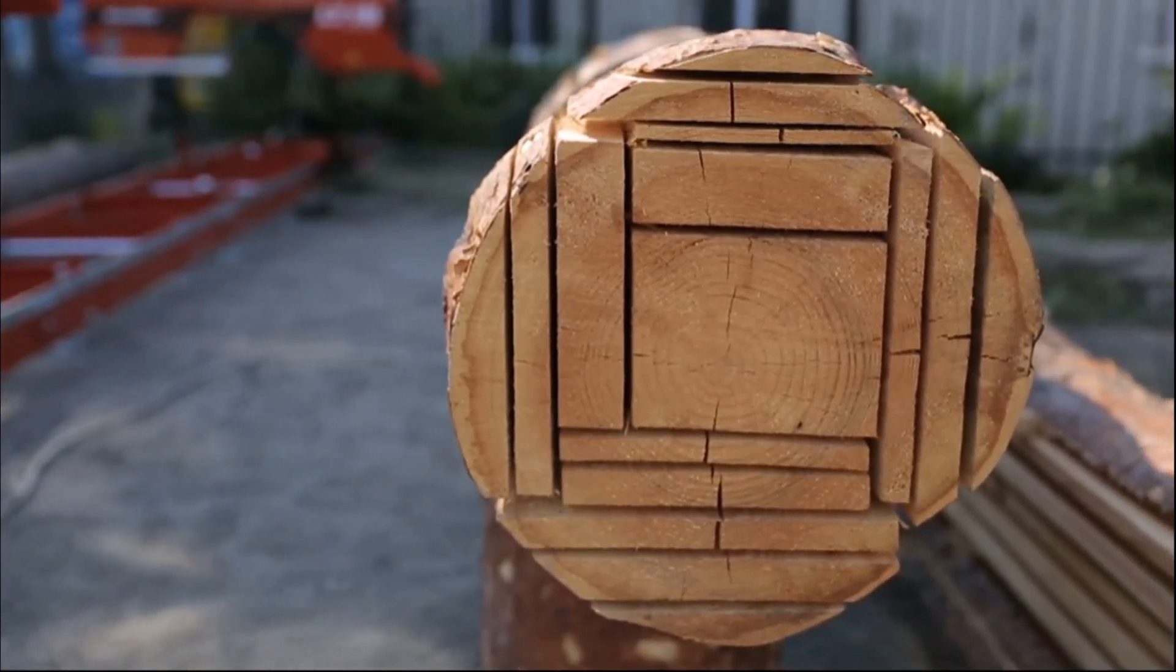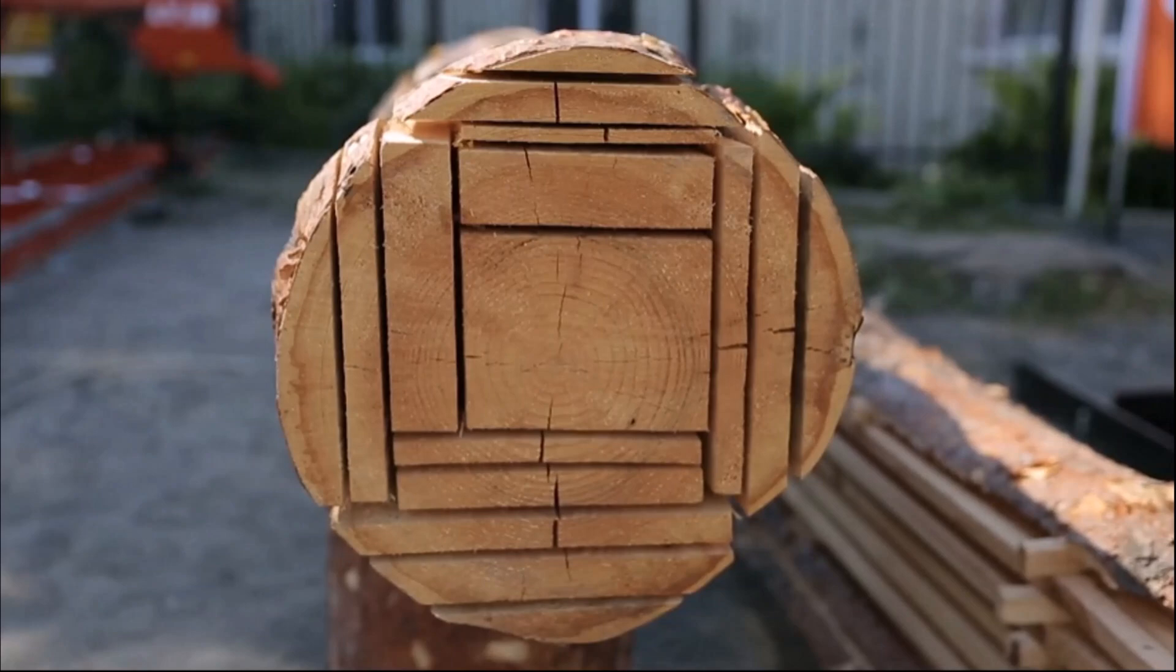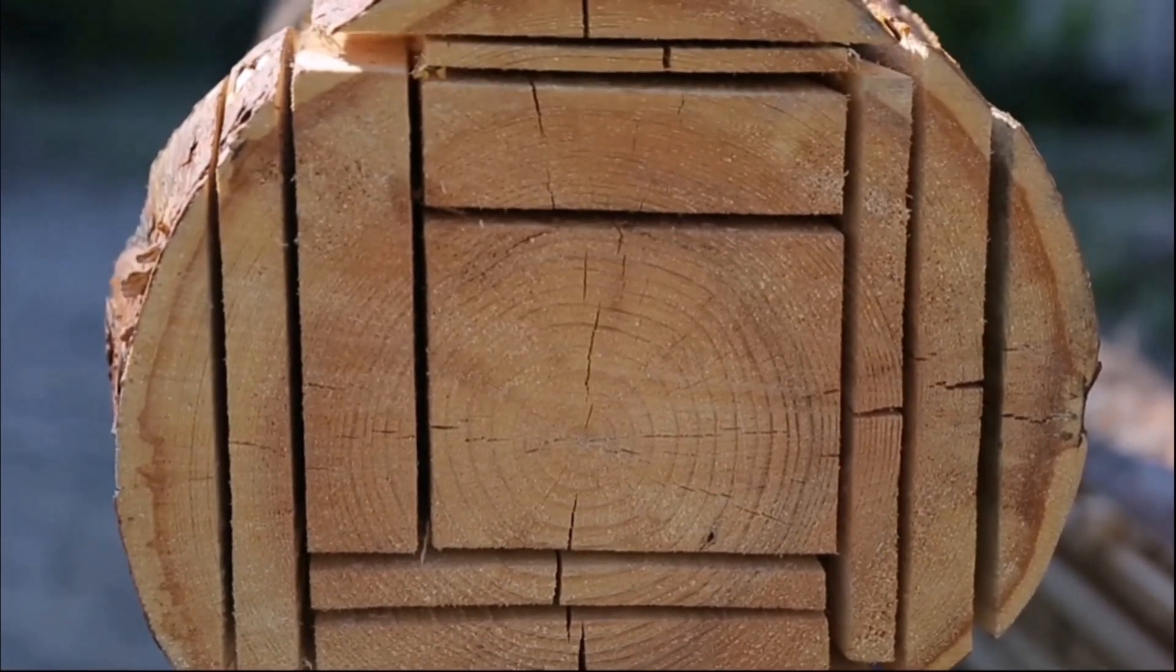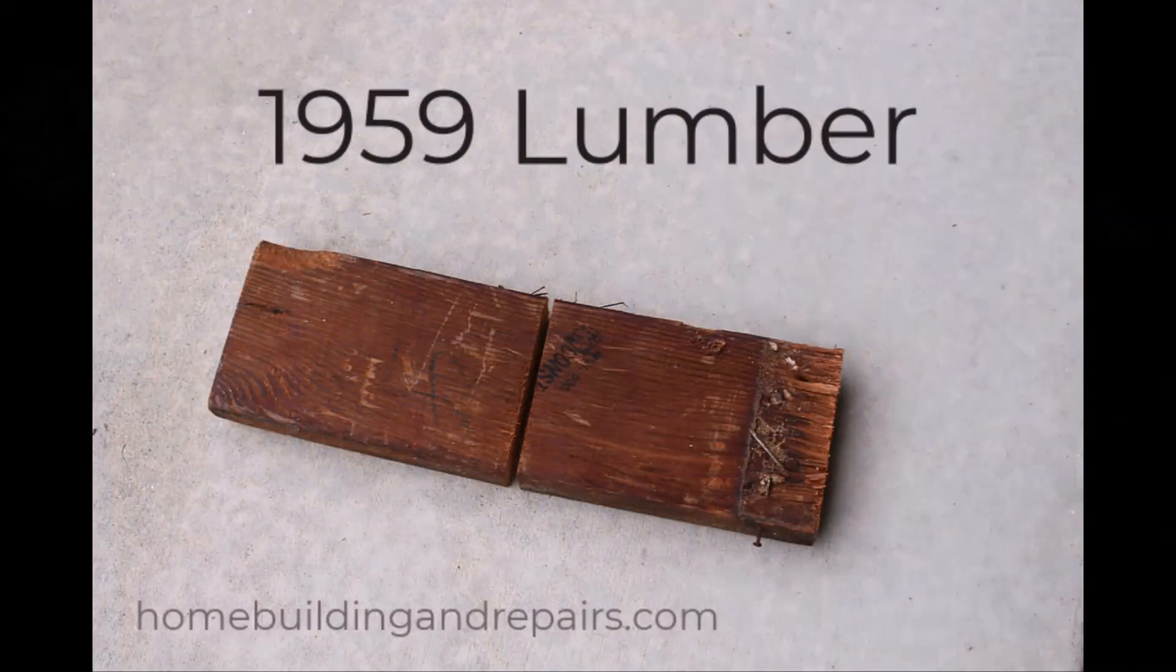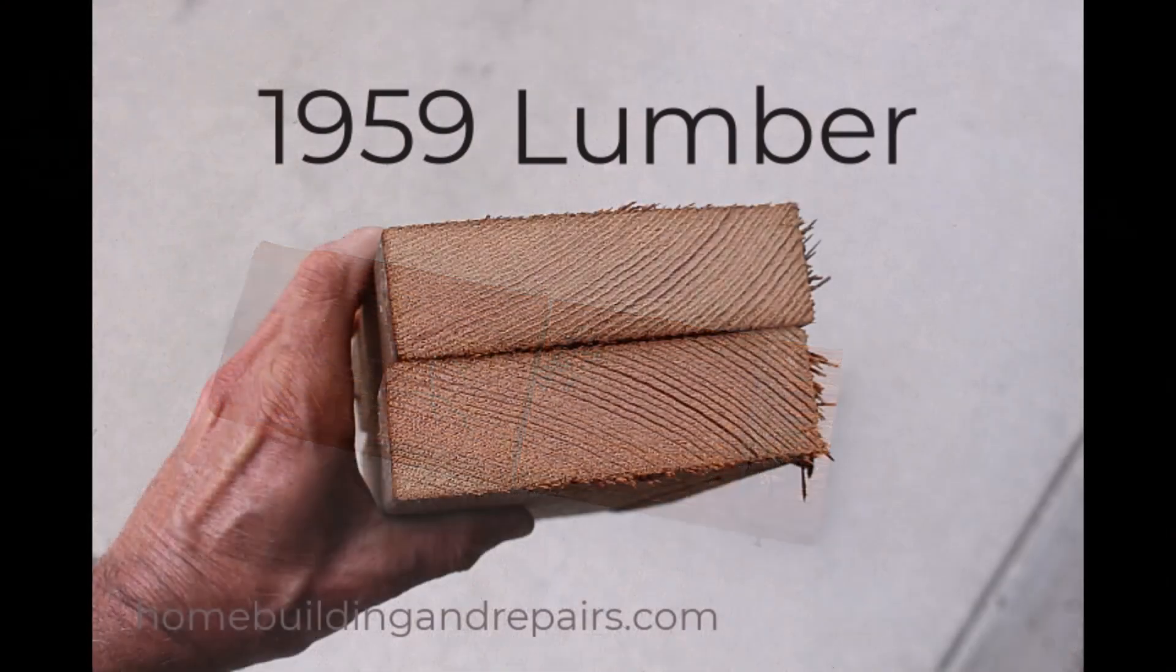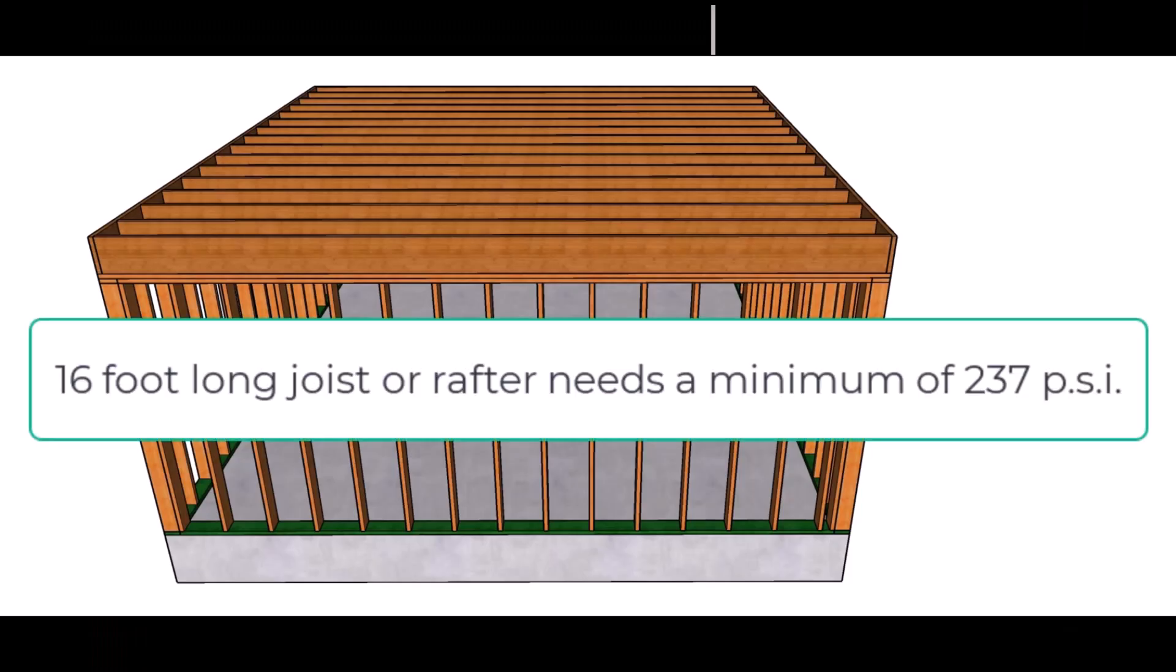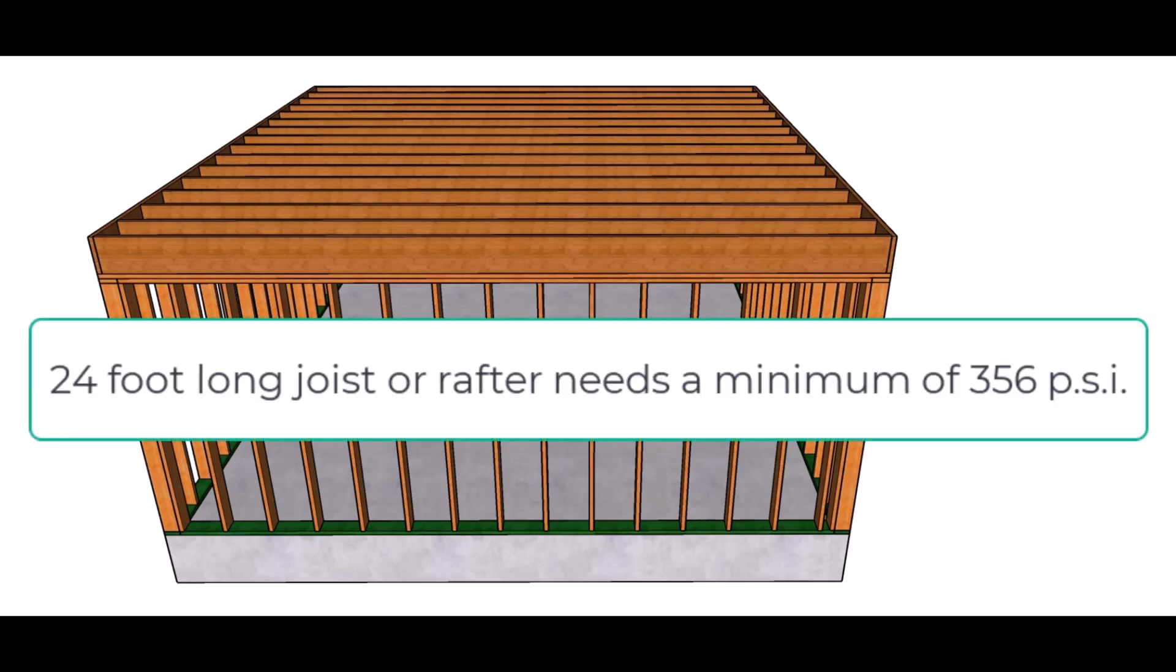We've all heard it before that old growth lumber is better than the new lumber that we're using today. So I thought I would go ahead and do all of my viewers a favor and try to figure out what the compressive strength is for the old growth, what it is for the new growth, and what's actually required by the engineers who created the span charts for rafters and floor framing. According to them, the minimum compression PSI rating for a 16 foot long floor joist is going to be 237 PSI. And for a longer floor joist like a 24 foot long floor joist, it's going to be 356 PSI. So the minimum compression rating will vary depending upon the length of the lumber.